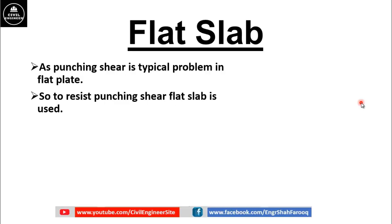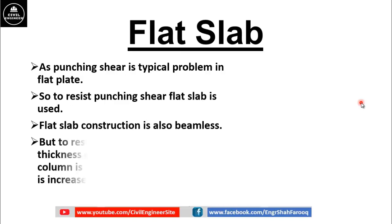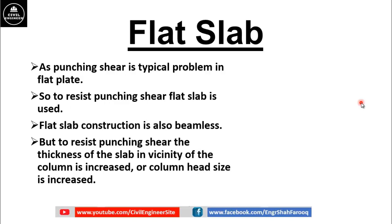To resist punching shear, flat slab is used. Flat slab construction is also beamless — beams are absent. But to resist punching shear and increase the shear capacity of the slab, the thickness of the slab in the vicinity of the column is increased, or the column head size is increased.